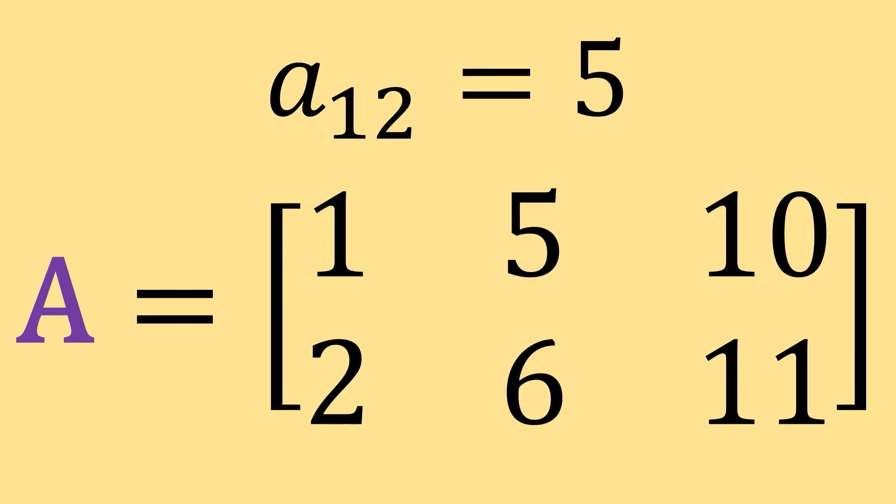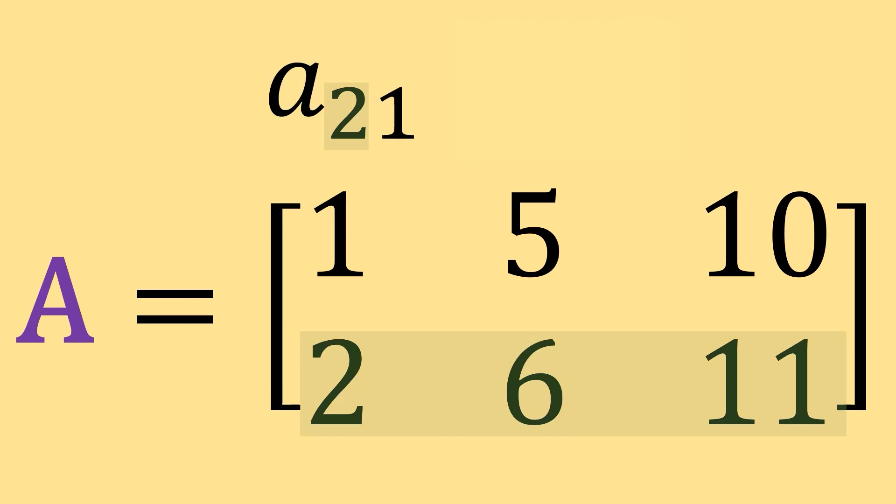Similarly, if we were then asked to find the number that's in position A 2, 1, that's just going to be the number that's in row 2, column 1, which is going to be 2.